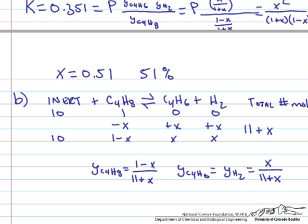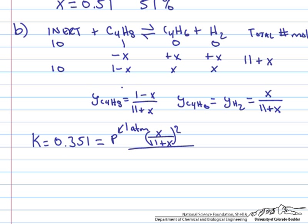So again, we just throw this into our equation for K. So K is equal to 0.351, which is equal to P, which again is just 1 atmosphere, times X over 11 plus X quantity squared, over this term here, so 1 minus X over 11 plus X.